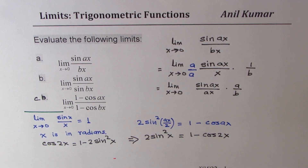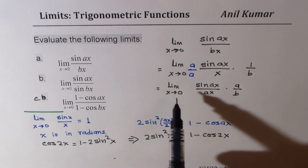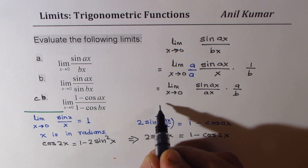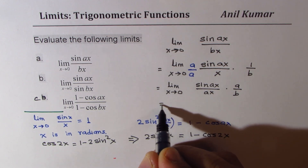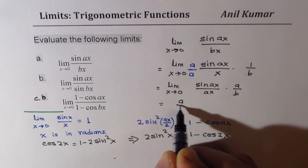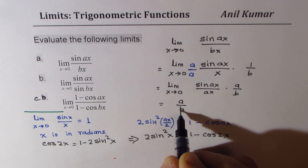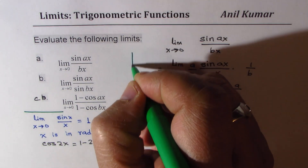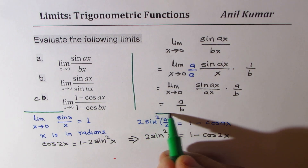Since we know that the limit of sine ax over ax is 1, we get our solution, which is a over b. That is how we are going to find the limit of all three given expressions.